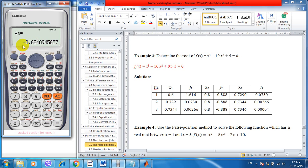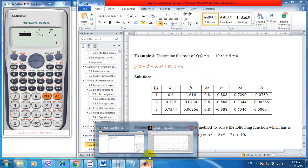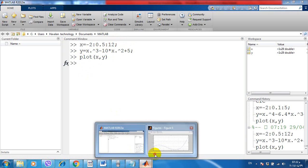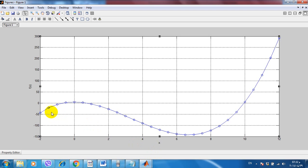Now let us write the code in MATLAB. x, for example, starting from -2 to 12 with a step of 0.5. This is our function here, and we plot x with y. We get this function from -2 to 12.